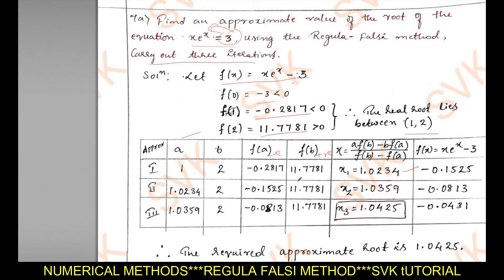Similarly, solve for x₂ and compute f(x₂). Substitute the f(x) value into the third row and use x₂ to find x₃. As three iterations were asked, we are done. Therefore the required approximate root is 1.0425.